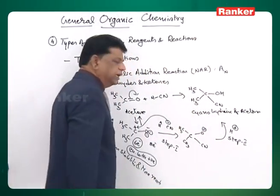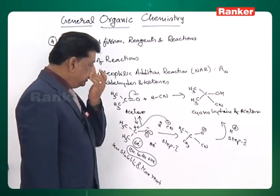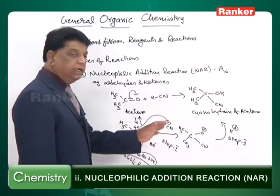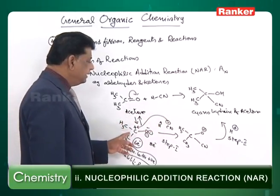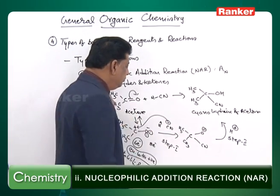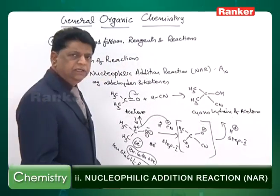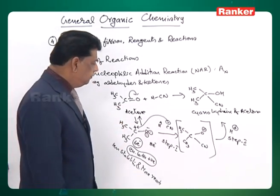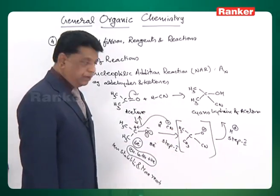Step two, the electrophile, does not have much significance — it is step one that determines reactivity, kinetics, and rate. The moment cyanide attacks, followed by H+ addition, the reaction is complete. In the intermediate, the charge is not on carbon but on O−. Since oxygen is electronegative with a negative charge, it is stable. There is no much importance for the carbon in the intermediate.